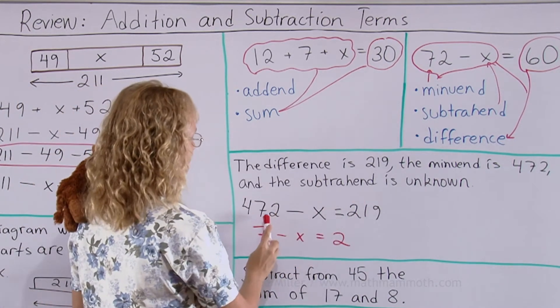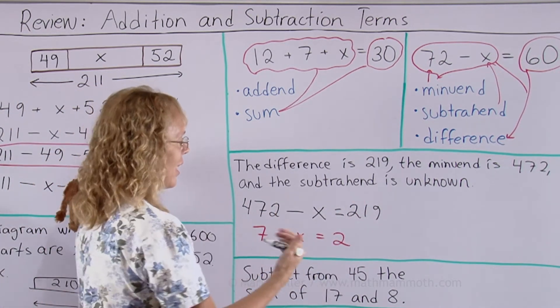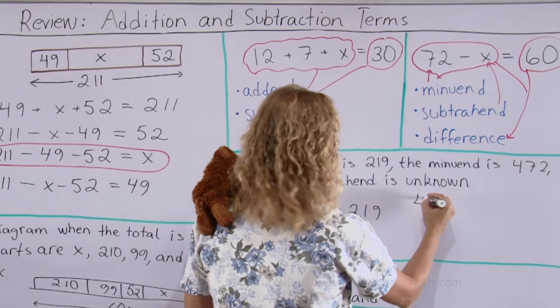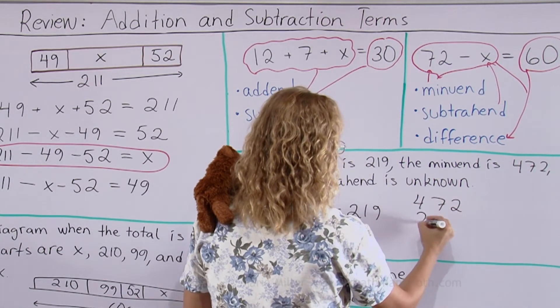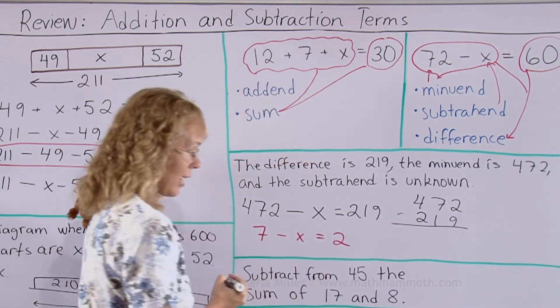So in this problem here, we subtract this minus this to get x. So we do 472 take the 219, subtract.